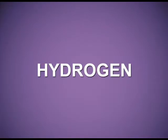Dear students, I hope and I am sure that you all know the first element of the periodic table, that is hydrogen. It is the most abundant element and the lightest element known. It was discovered by Henry Cavendish and its name hydrogen was proposed by Lavoisier, because when it burns in the presence of oxygen it produces water. Today, we will discuss the unique position of hydrogen in the periodic table.